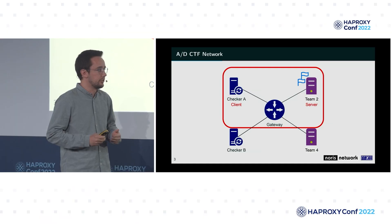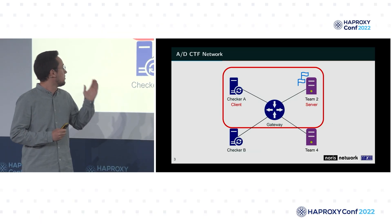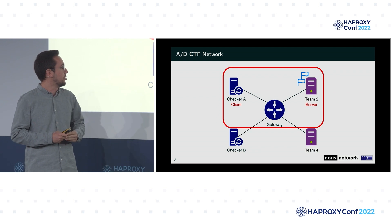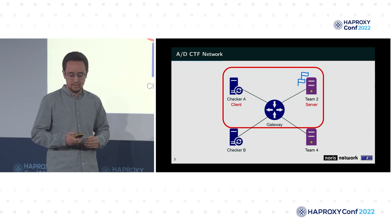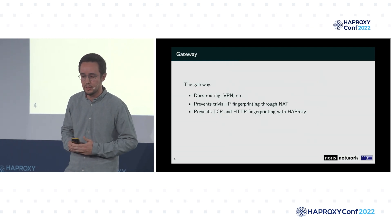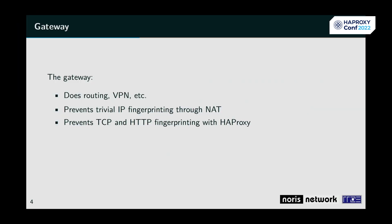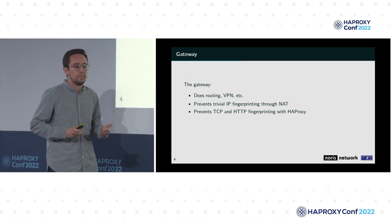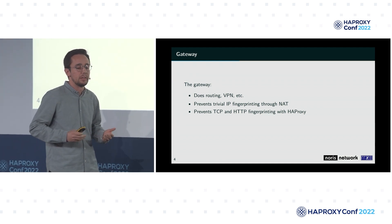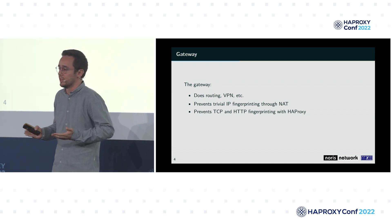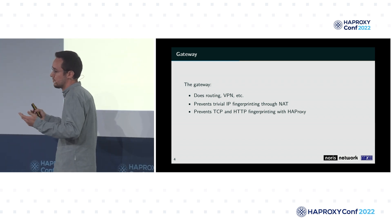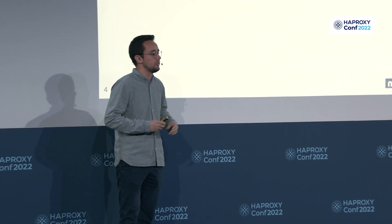For the rest of this talk, we'll look at one client and one server: the checker acts as the client, the team acts as the server, and we have the gateway in between. The gateway first of all does all the routing — it's basically a router machine for all traffic in the competition network, and it also terminates VPN connections of the teams. From the beginning, it already prevented the trivial fingerprinting of looking at source IP addresses. We use NAT rules so that all traffic arriving at teams just shows the gateway's IP address, not the real source IP.